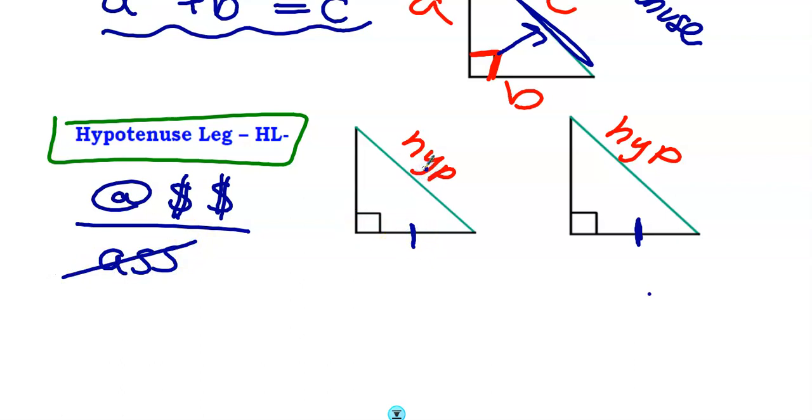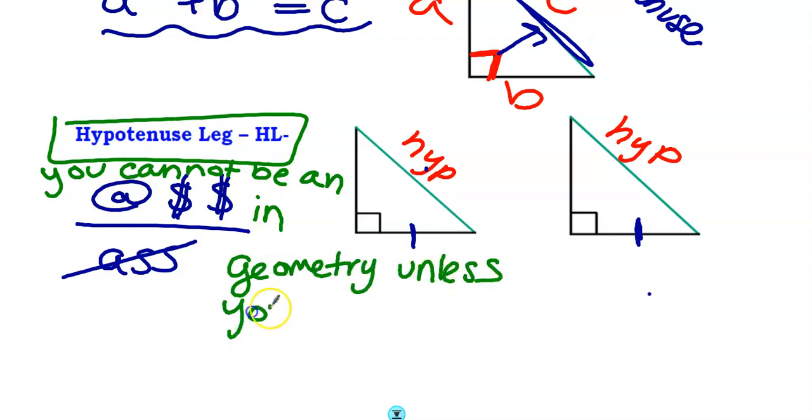I know we've taught you that angle side side doesn't work. Well, here's a new phrase. You cannot be an A-S-S in geometry unless you are right. I'm not saying a bad word, guys. I'm saying A-S-S, angle side side. So you cannot be an A-S-S in geometry unless you are right.